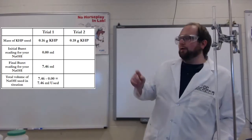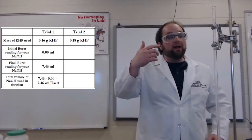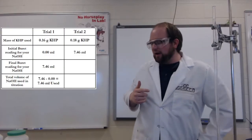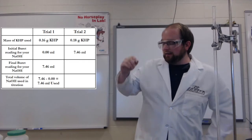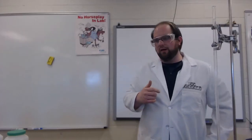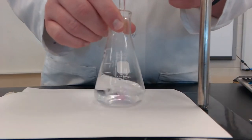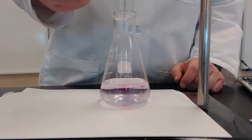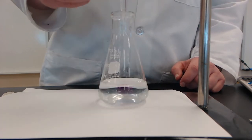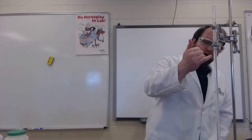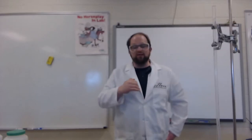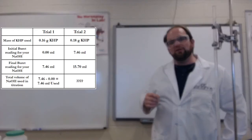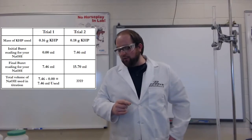As I move into my second trial, this is the one with the 0.18 grams of KHP. My new initial is actually going to be at my old ending point at 7.46 milliliters. Let's see how long this one takes and how many milliliters it's going to end up with. It looks like our final burette mark was around 15.70 milliliters. You should then be able to calculate the total that was used for our second trial, and we now have those amounts of NaOH that were used.